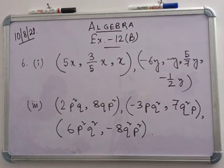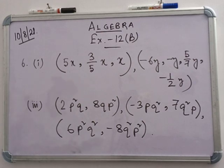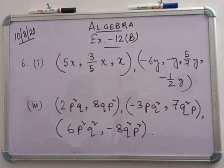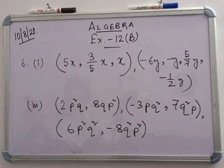Now, a simple discussion of the true-false section with 10 questions. Number 1: the expression 8a has 2 terms — false, because it is a one-term monomial. Number 2: 6 plus xy is a trinomial — false, because it is a binomial. Number 3: 3ab is a binomial — false. All the remaining questions are similar; you have to do them on your own — very easy.